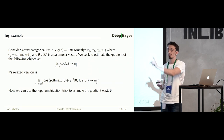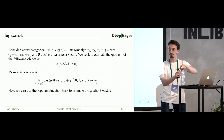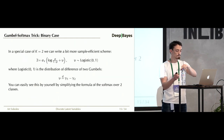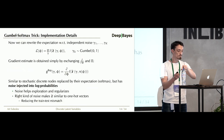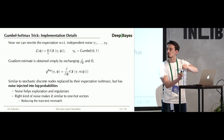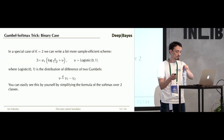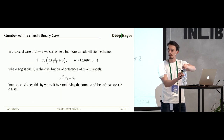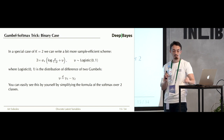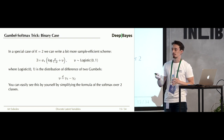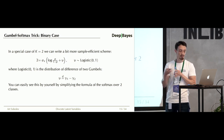A student asked about the parameter p in the Bernoulli relaxation slide. The answer: p is the probability — it's not an arbitrary constant, it's the parameter of the Bernoulli distribution, which is parameterized by a single probability p.